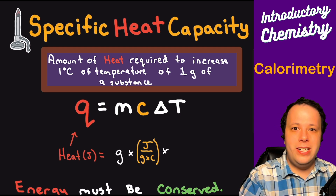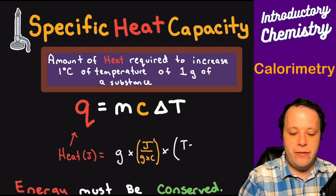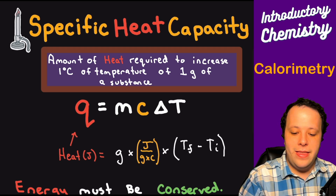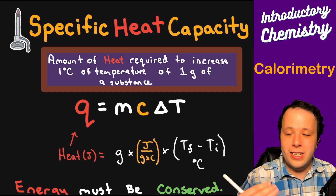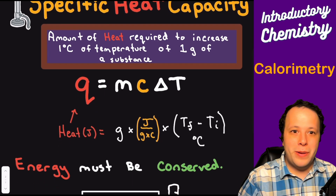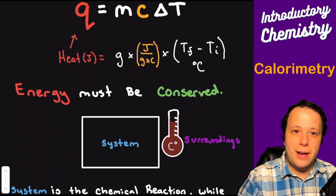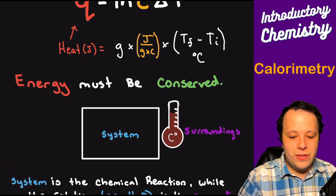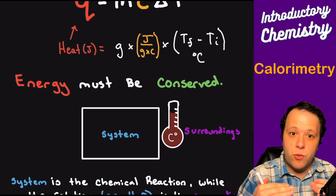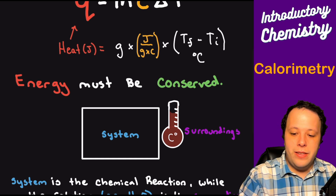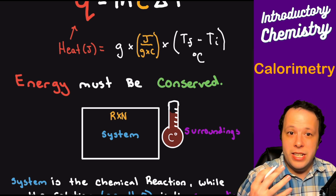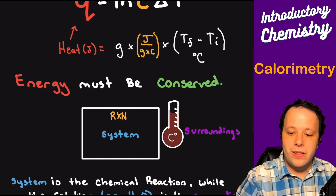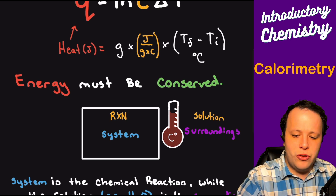We multiply by the change in temperature, which is T-final minus T-initial in degrees Celsius. This can also be used with calories, where specific heat would be in calories per gram per Celsius. Keep in mind energy must be conserved, so we look at how the system and the surroundings interact — the system is our chemical reaction, and the surroundings is the solution, like water.